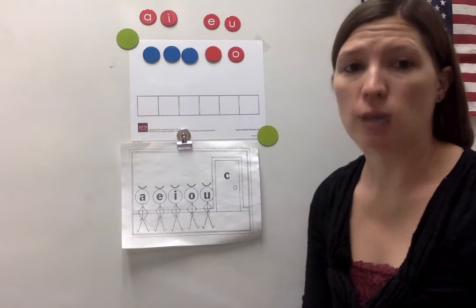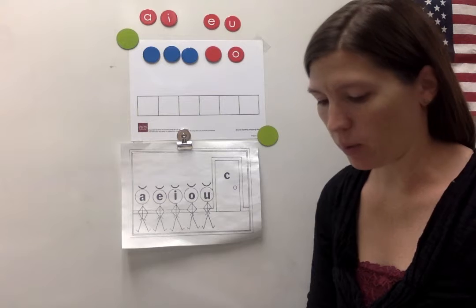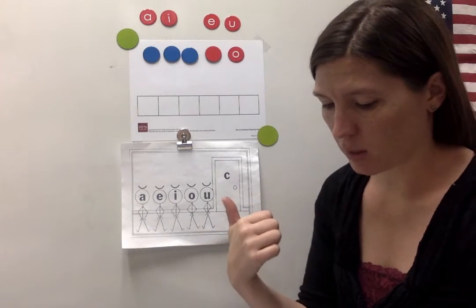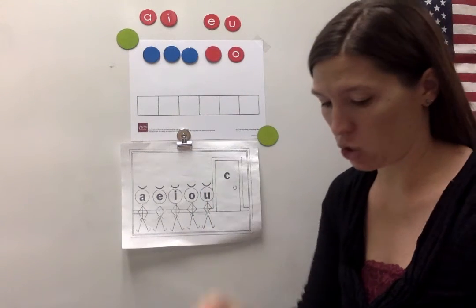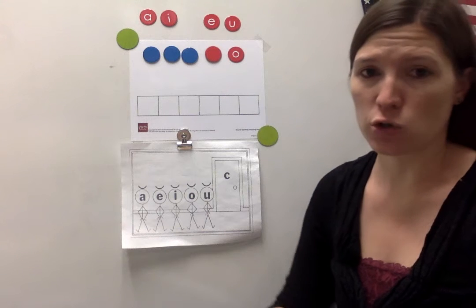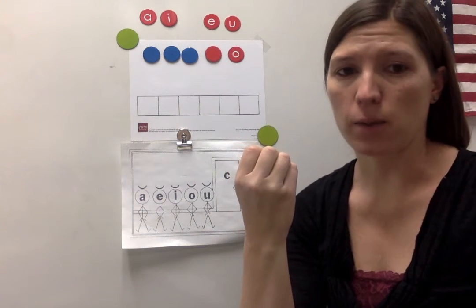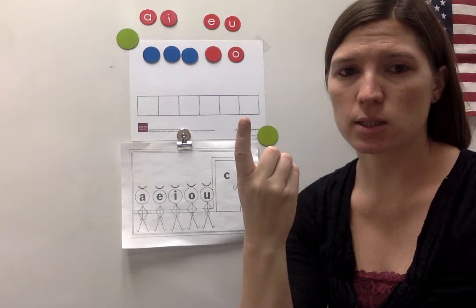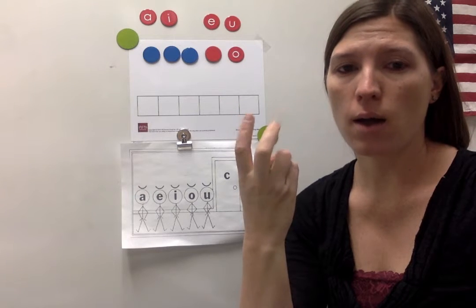My first word is sob. I'm going to build the word with the sound chips and then I'll make the trade for my spelling chip. Let's finger stretch sob. Get your fist up. Sob. What's the first sound? S, AH, B.